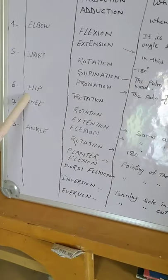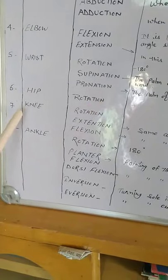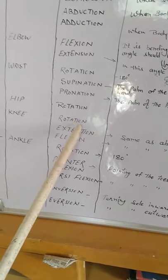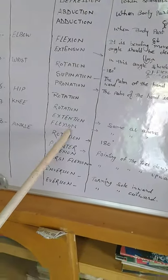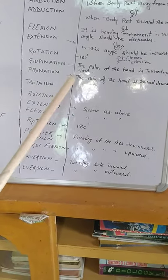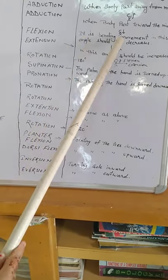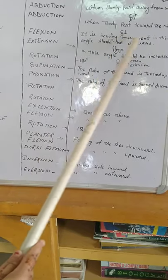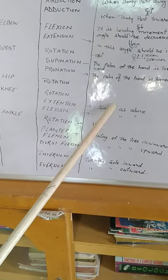Now in hip joint, rotation. Now knee joint, rotation, extension and flexion. Now definition of extension and flexion. Same as above means it is bending. You will write same answer in this.